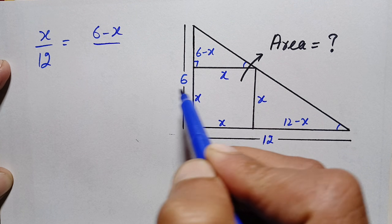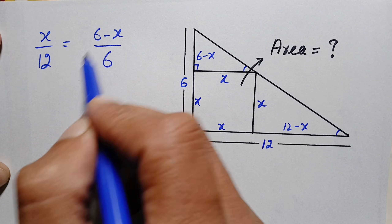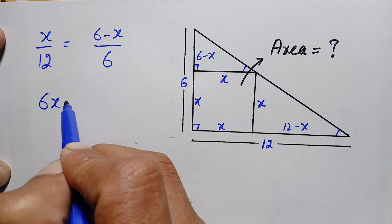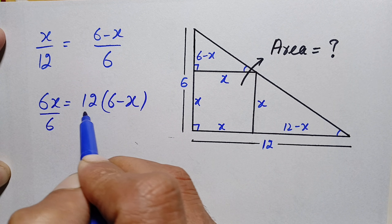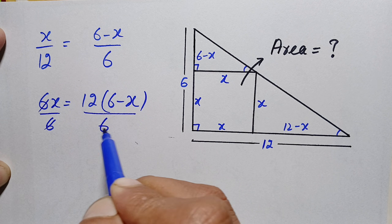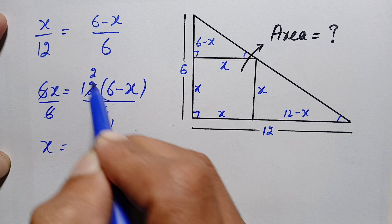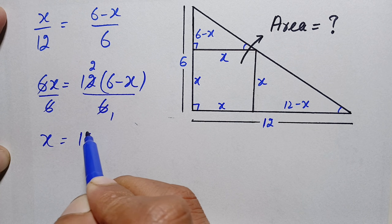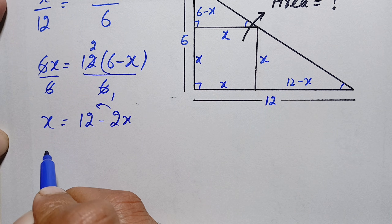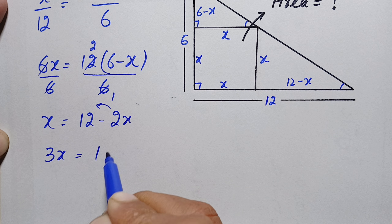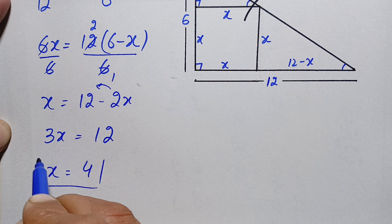So we have x/12 = (6 - x)/6. We cross multiply to get 6x = 12 times (6 minus x). Dividing both sides by 6 gives x = 2(6 - x), which becomes x = 12 minus 2x. Taking 2x to the left side gives 3x = 12, and dividing both sides by 3 gives x = 4.